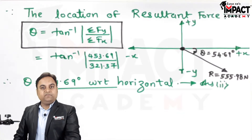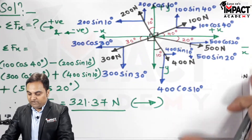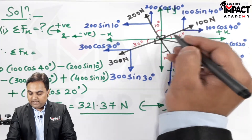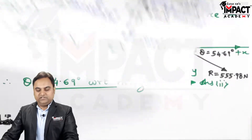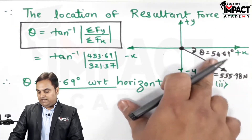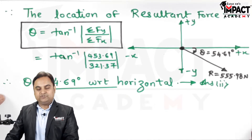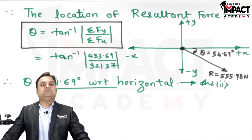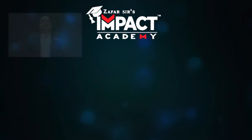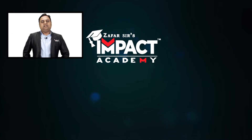The meaning of this answer: when five different forces act at a single point (all away from the point — tensile or pull-type forces), all of them can be replaced by a single resultant force of 555.98 N acting in the fourth quadrant at 54.69°, having the same effect as all five forces combined. That is the definition of resultant — a disturbing force that tries to move the body along its direction. If you found this video helpful, please like, share, comment, and subscribe.